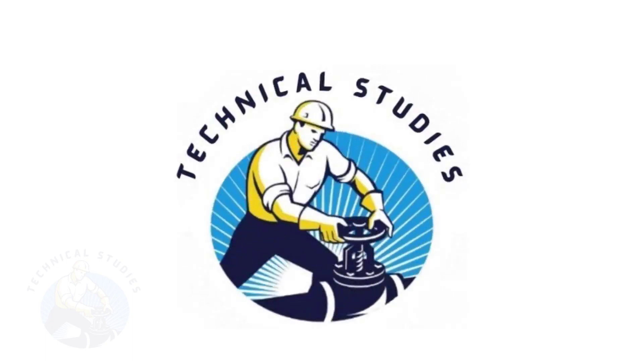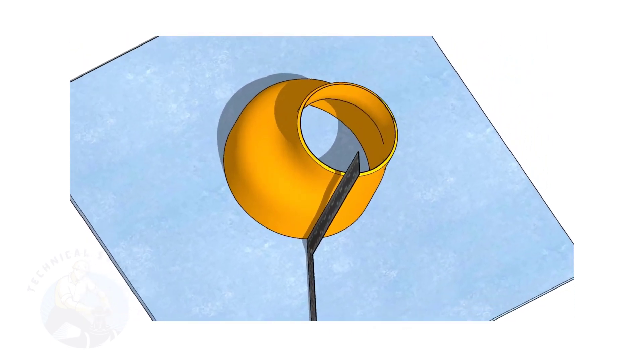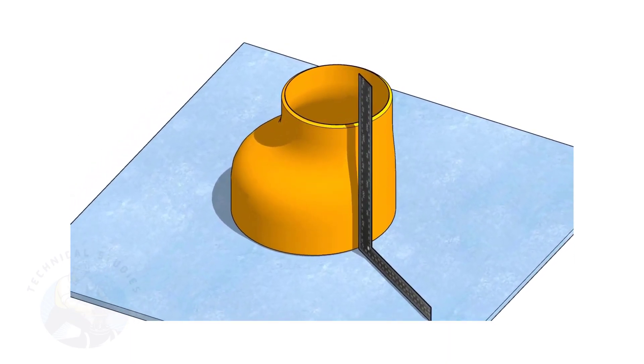Welcome to Technical Studies. Fitting an eccentric reducer to a pipe that is already fitted to another fitting like a flange, tee, elbow, etc. is a little tricky.